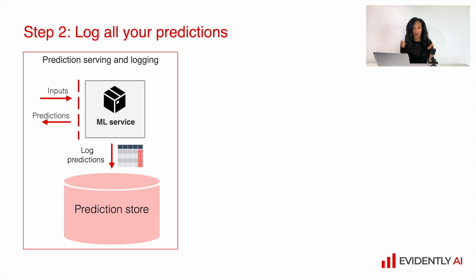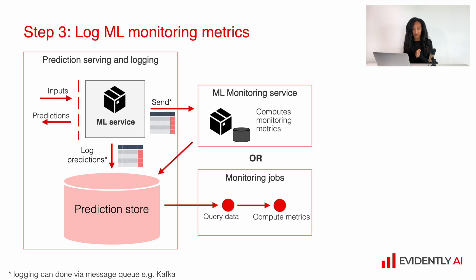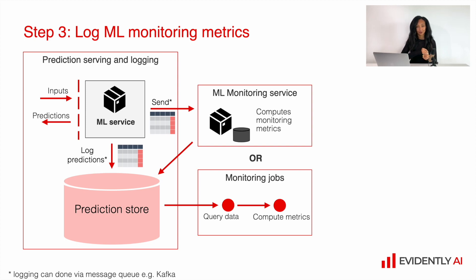There are different ways to implement this, and it depends heavily on how you deployed your machine learning models. Generally, you have your machine learning model service with some inputs and predictions, and you implement logging so you have a prediction store where you store your prediction data. There are two ways to implement monitoring: a machine learning monitoring service, or monitoring jobs operated with a pipeline manager. The first option is to use your prediction store — the monitoring service can pull data from it and compute all needed metrics, or monitoring jobs can load data from it.